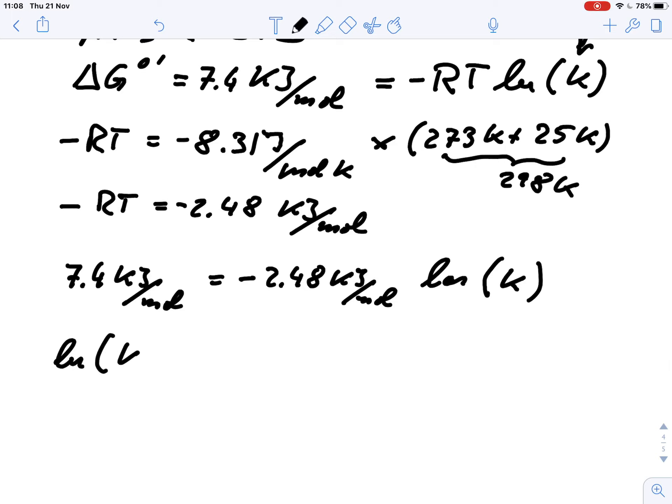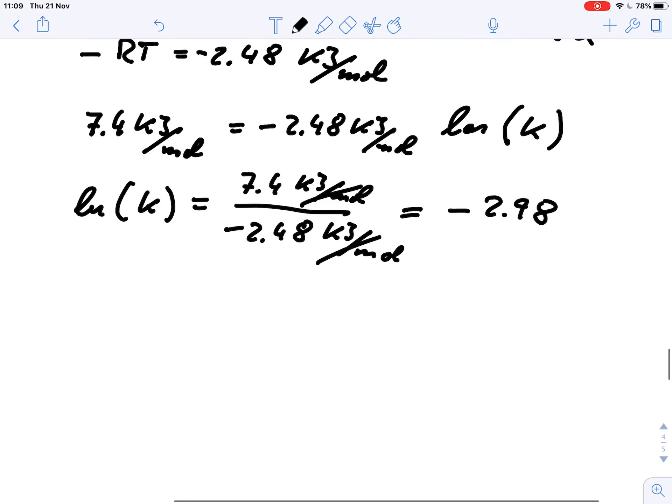So LN K equals 7.4 kJ per mole divided by negative 2.48 kJ per mole. And we see that the units nicely cancel out. And when we plug that into a calculator we get negative 2.98. So LN K equals negative 2.98.